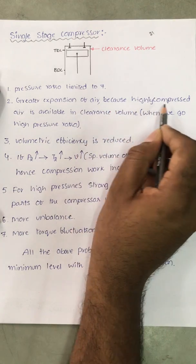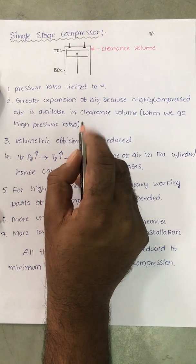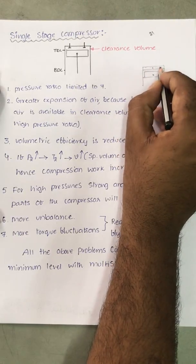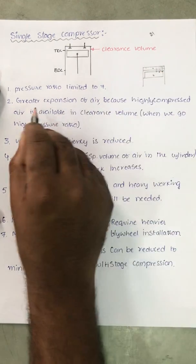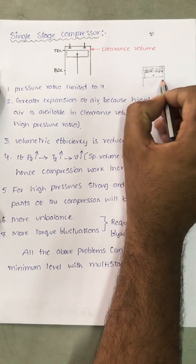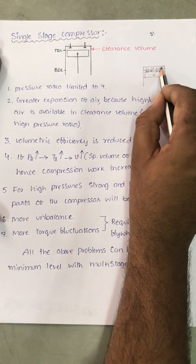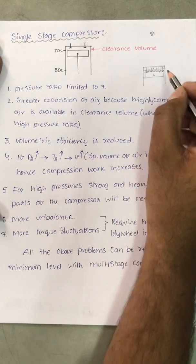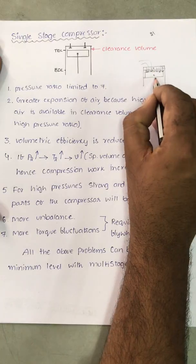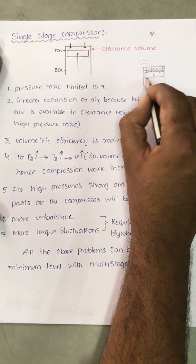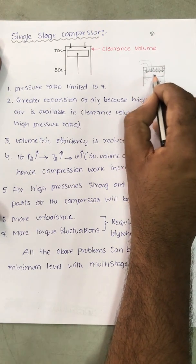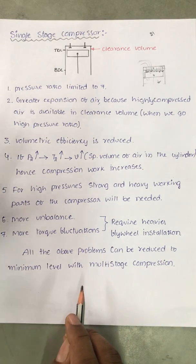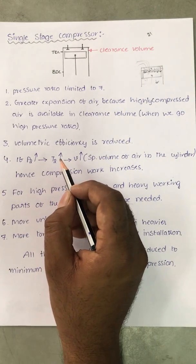When we go for a high pressure ratio, more air is available in the clearance volume under high pressure. This air is expanded first, resulting in greater expansion of air. Because expansion is more, the suction effect is reduced — the piston moves and the air keeps expanding, so the effective swept volume for the suction stroke is reduced. The volume of air entering the cylinder is reduced, and volumetric efficiency is reduced.